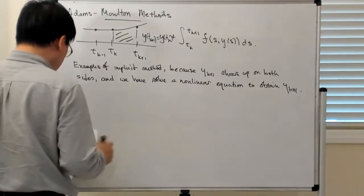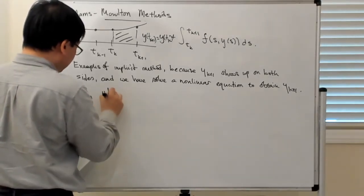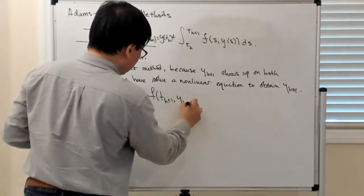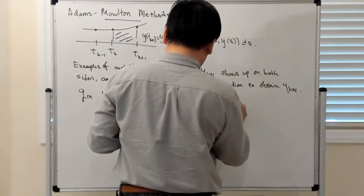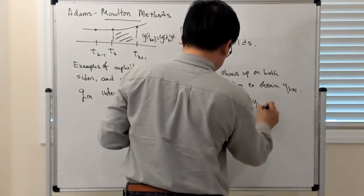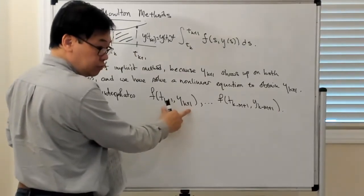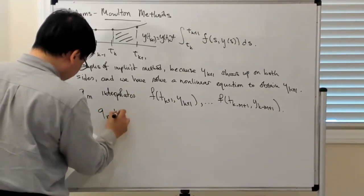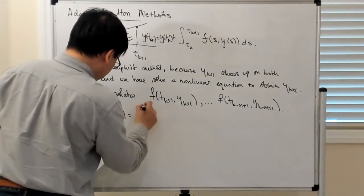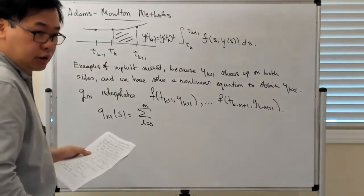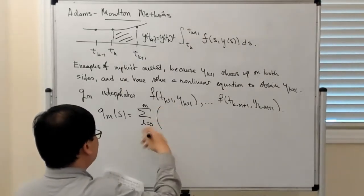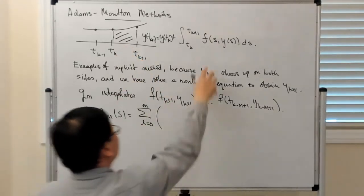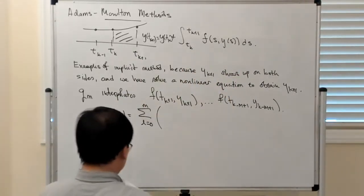So let's call that interpolating polynomial qm. qm interpolates f(tk+1, yk+1) — the main difference is that you've added this additional point f at tk+1, yk+1. Everything else conceptually remains very similar. qm of s equals the sum from l=0 to m — because you have an additional point, now you get a higher-order interpolating polynomial. But conceptually it's the same basic idea: you have data at a bunch of points, you interpolate that, use that interpolant to approximate the integral of f along the solution curve, and then use that to construct a numerical method.